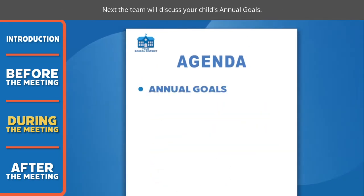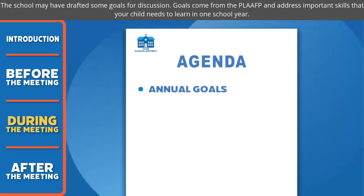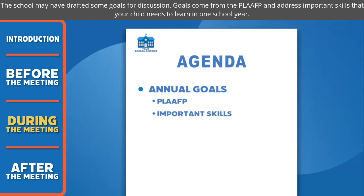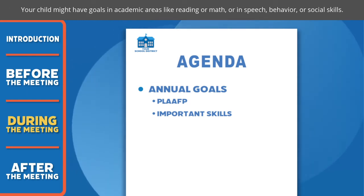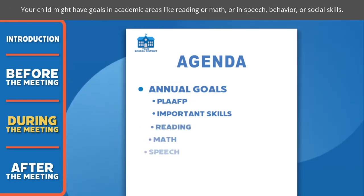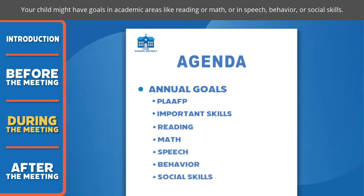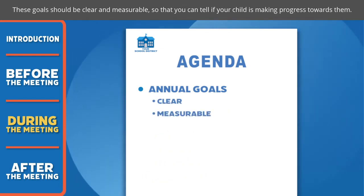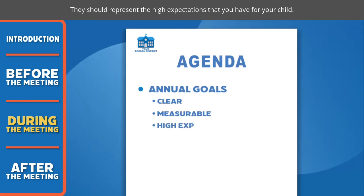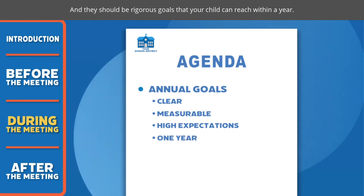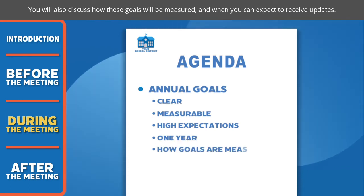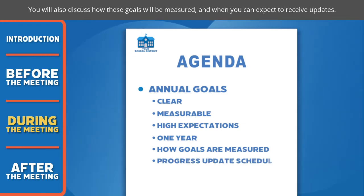Next, the team will discuss your child's annual goals. The school may have drafted some goals for discussion. Goals come from the PLAFP and address important skills that your child needs to learn in one school year. Your child might have goals in academic areas like reading or math, or in speech, behavior, or social skills. These goals should be clear and measurable, so you can tell if your child is making progress towards them. They should represent the high expectations you have for your child and be rigorous goals that your child can reach within a year. You will also discuss how these goals will be measured and when you can expect to receive updates.